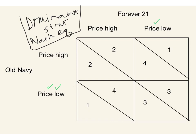It's a symmetric game, so if we went through Forever 21's possibilities, we'd find that no matter what Old Navy did — price high or price low — Forever 21 would also choose to price low. This is called a dominant strategy. A dominant strategy exists for a player when, whatever its rival does, the best strategy to play is the same. You're going to want to play that no matter what.